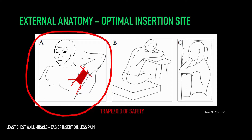The advantages of using this site are: first, there's the least amount of muscle over this area, which makes insertion easier and less painful for the patient. Second, in the lateral areas of the chest, you're much less likely to damage an intercostal vessel, because they have a tendency to sag down in the posterior aspects, especially in older patients. Finally, you're generally well above the diaphragm, although you'll of course use ultrasound to confirm this.